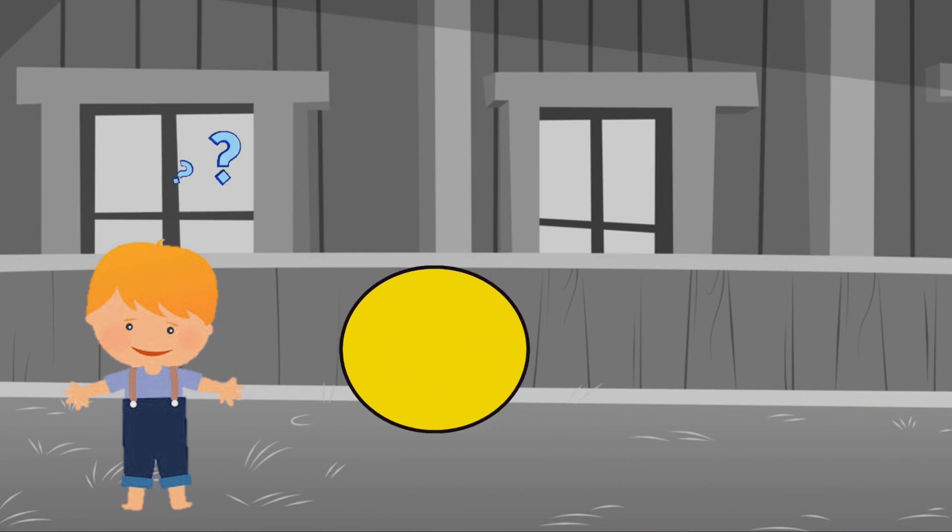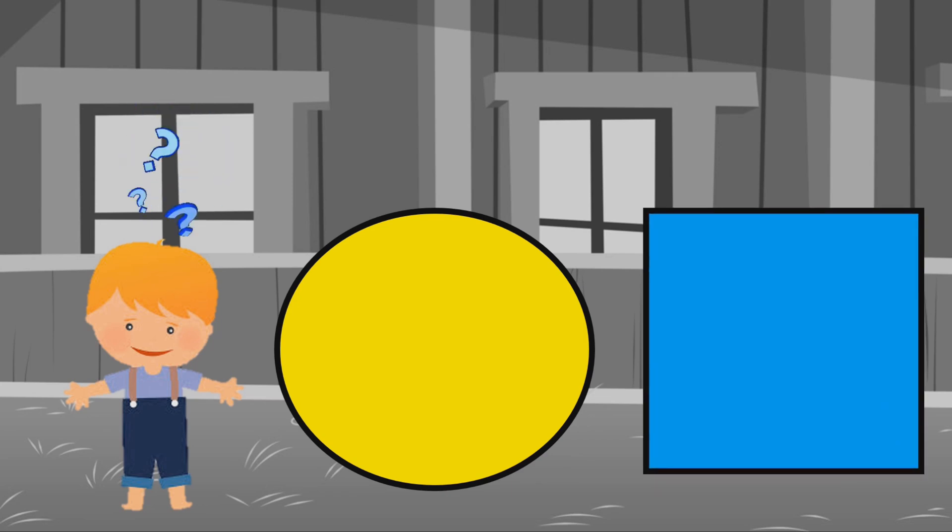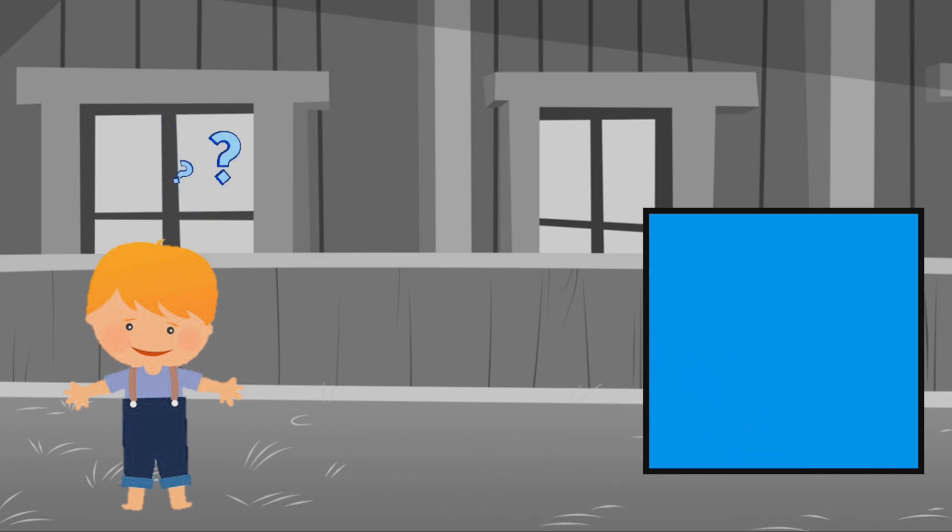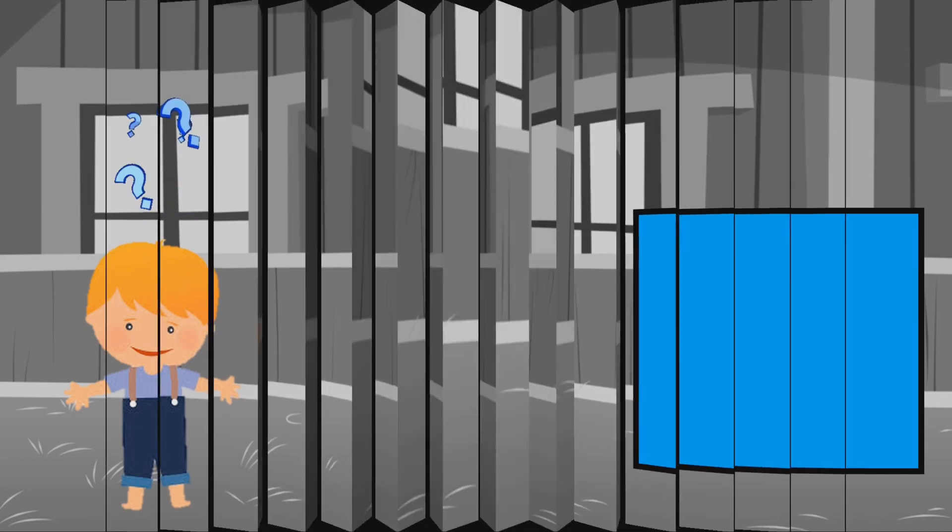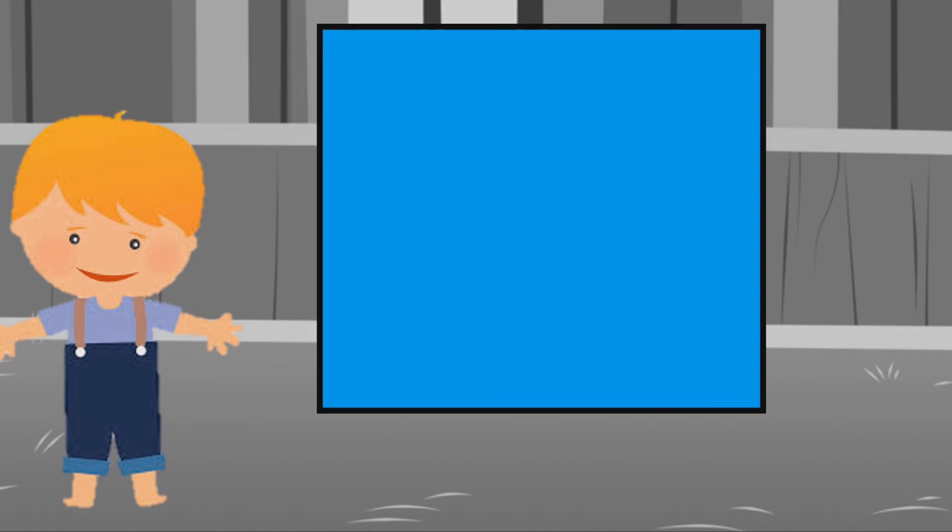Teddy sees two shapes. Do you want to help, Teddy? Which one is the square? Is it the yellow one or the blue one? You're right! The blue one is the square.